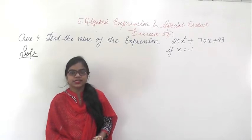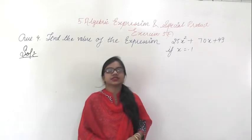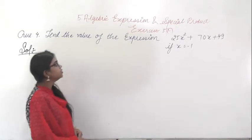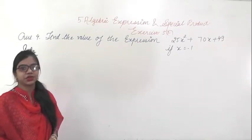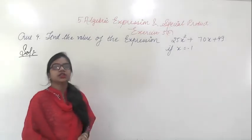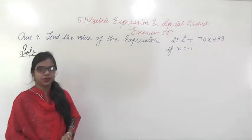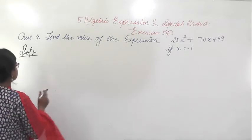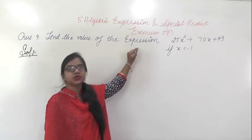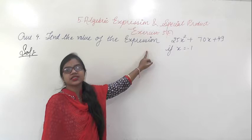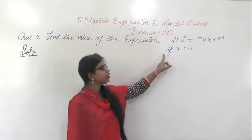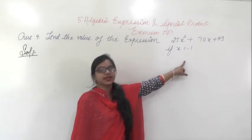Good morning all of you. As we have started studying exercise 5F in algebraic expressions and special products, we have finished till question number 3. So we will start with question number 4 with the same exercise. In this question it is saying: find the value of the expression 25x² + 70x + 49 if x is equal to minus 1.